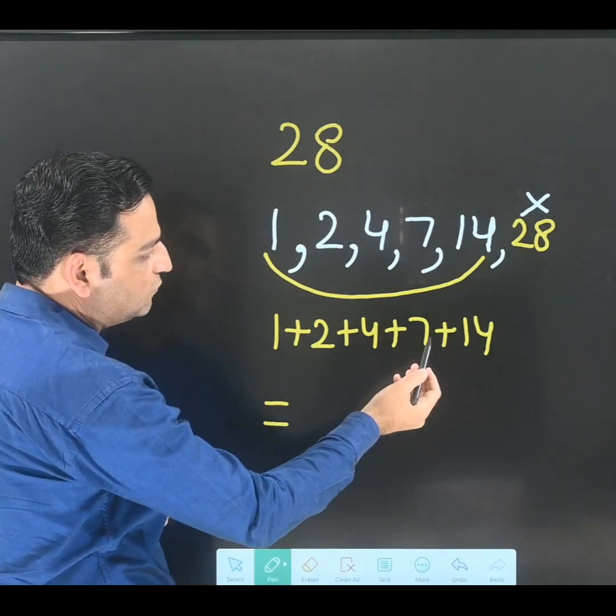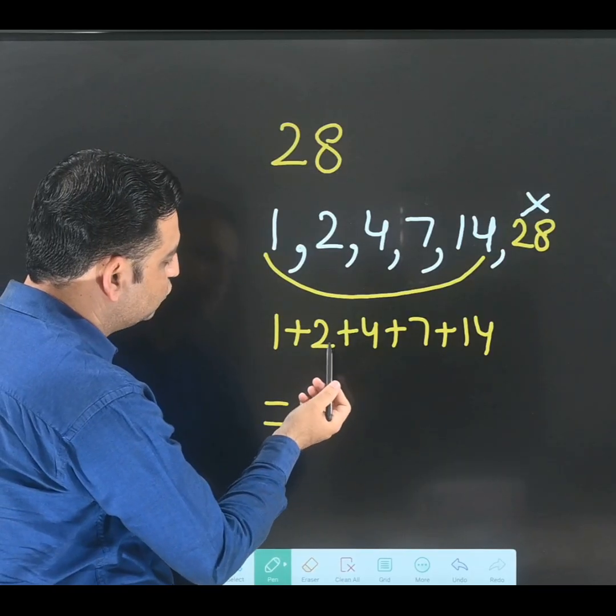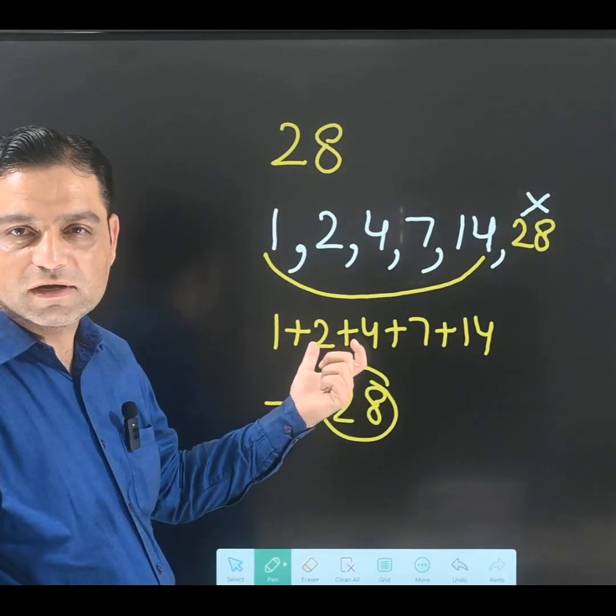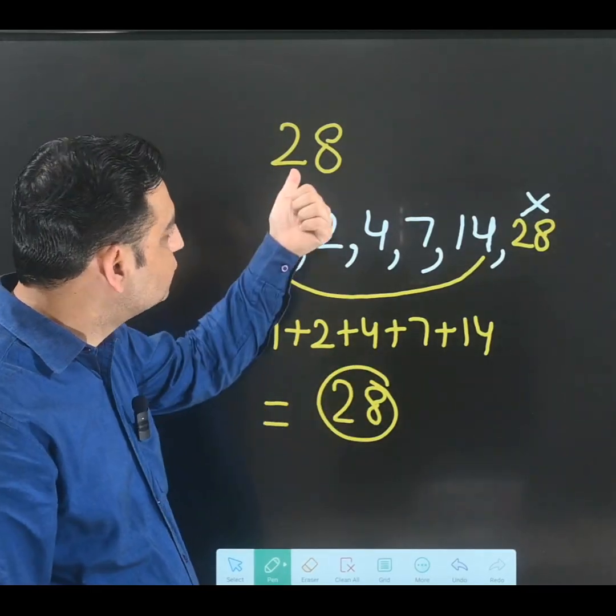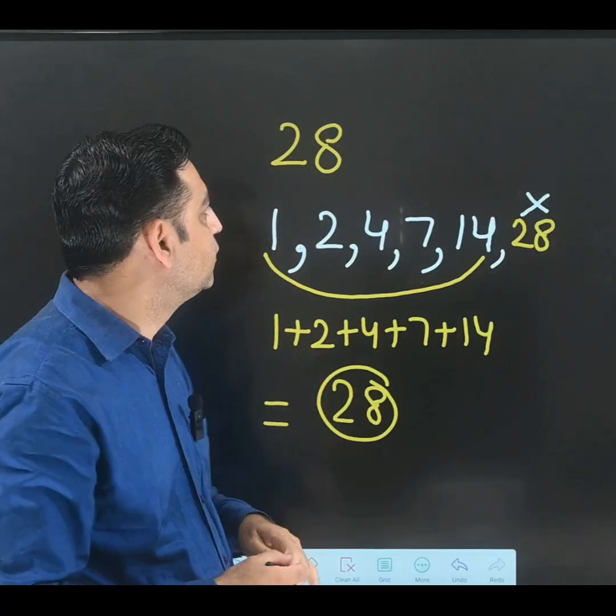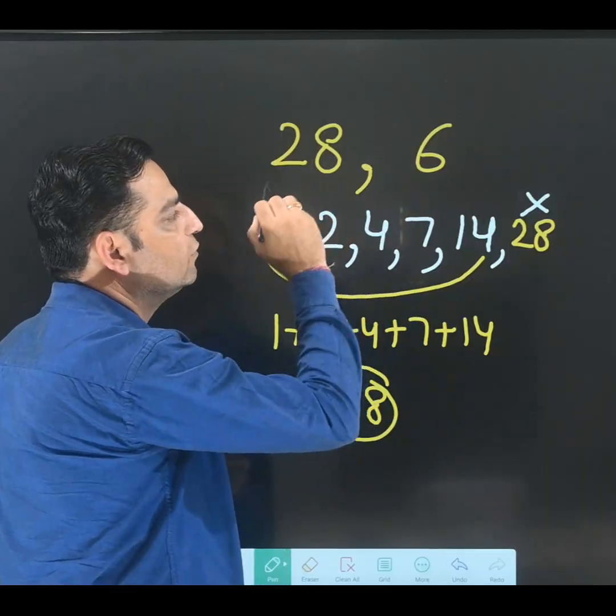14 + 7 = 21, 21 + 4 = 25, 25 + 2 = 27, 27 + 1 = 28. See, by adding all the factors we are getting the same number. So two perfect numbers I have already taught: first number was 6, second number is 28.